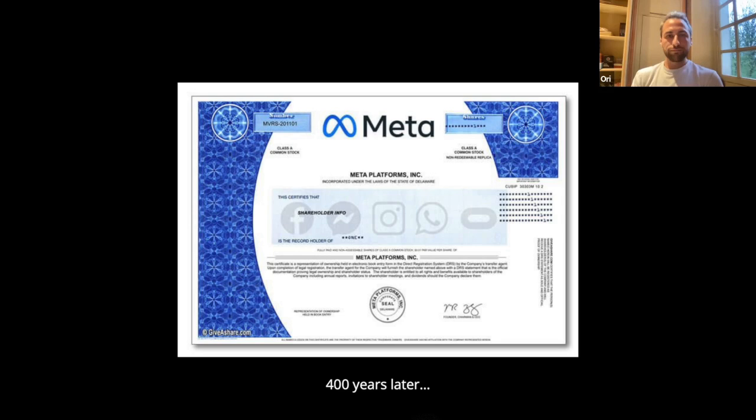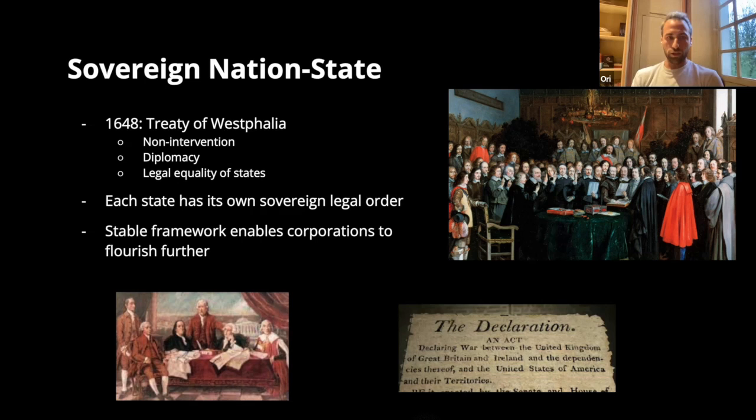In parallel, another big institutional upgrade of the 17th century was the notion of the sovereign nation state. Before this point, there was a mixed notion of who had control over territories — the church could intervene in local affairs, or a territory might be part of an empire with mixed sovereignty. But after the Thirty Years' War, the Treaty of Westphalia established that the state of that area has its own monopoly of force, which other territories cannot legitimately intervene in.